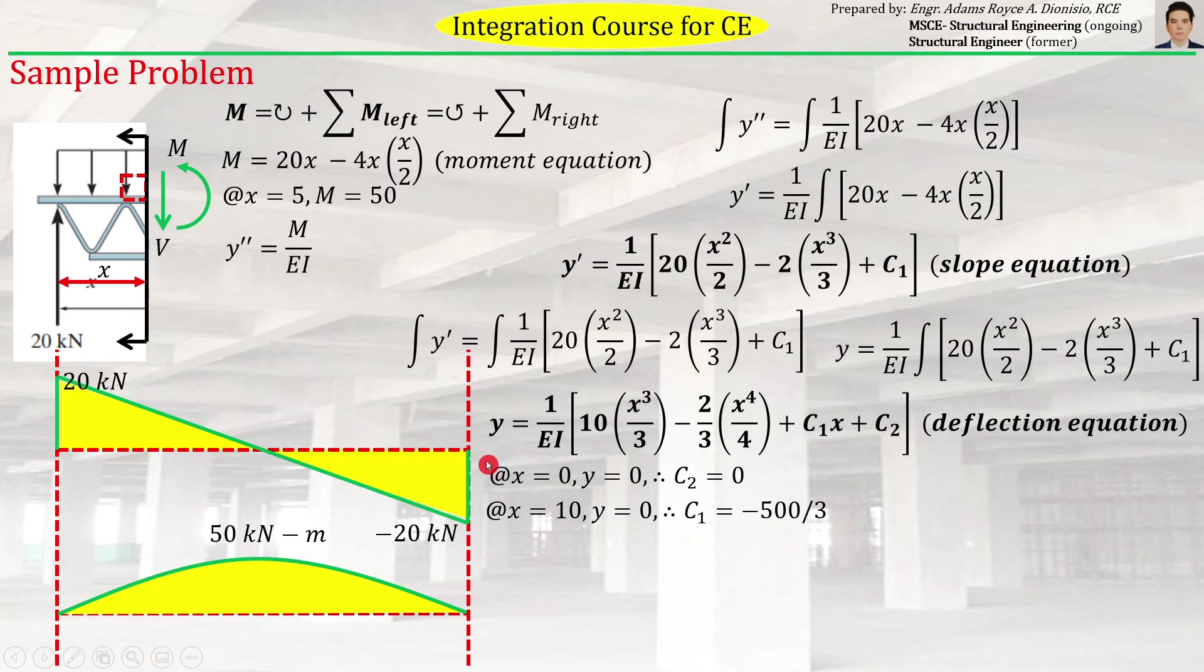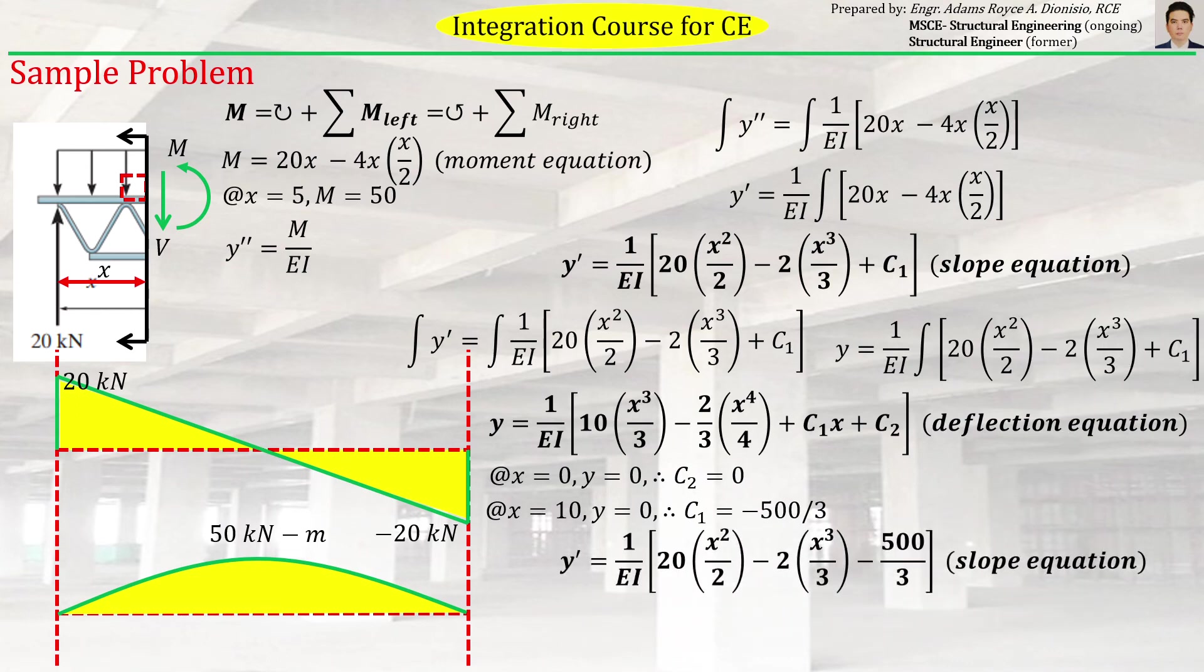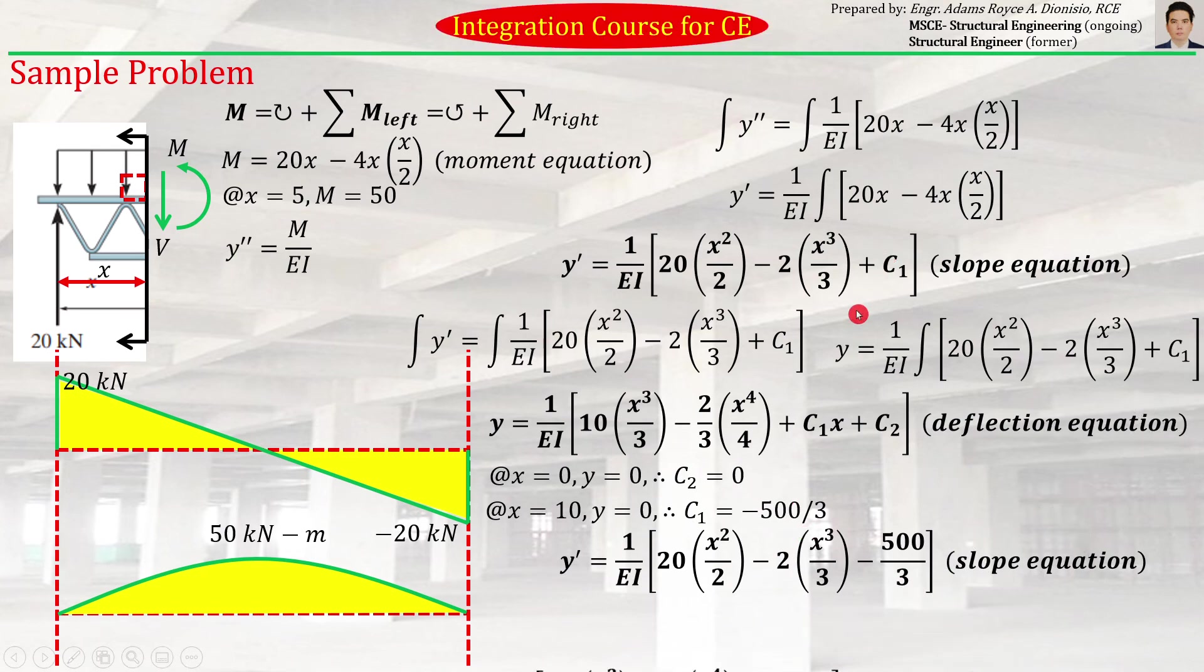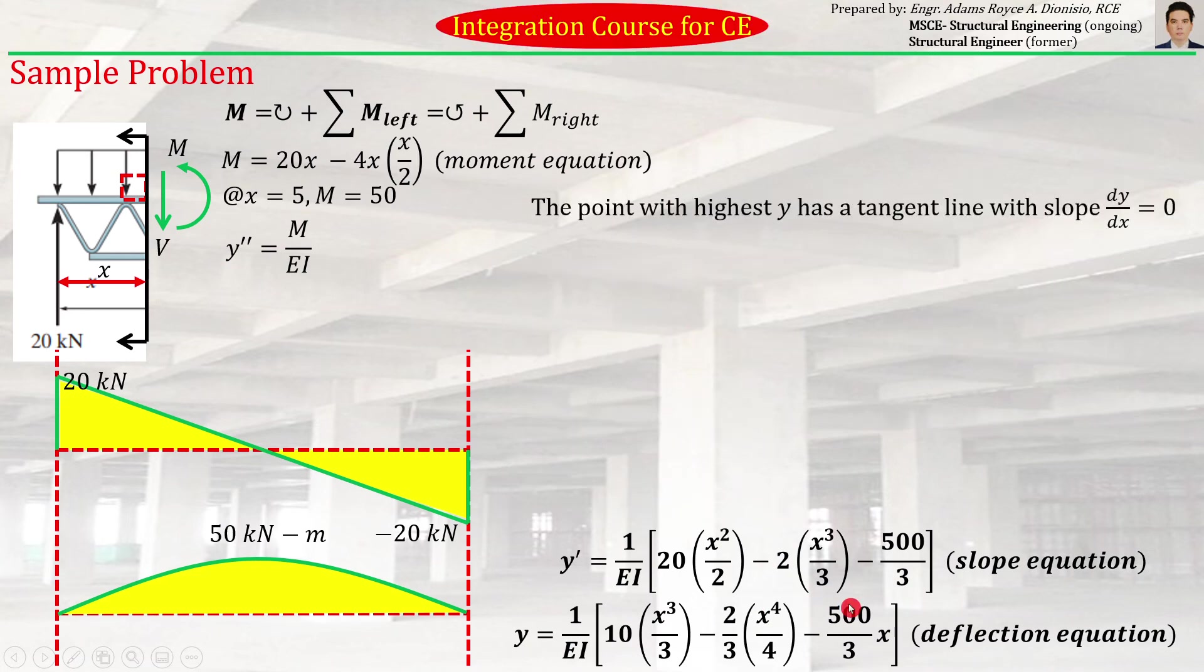Then we can use the other boundary condition at the right side, at the right end, at x = 10. At the right end, the deflection is also equal to zero. Substitute that here and we can obtain the value of C1, which is negative 500/3. Since we obtained the values of the constants of integration, we can simply substitute them into these two equations to find the exact slope and deflection equations.